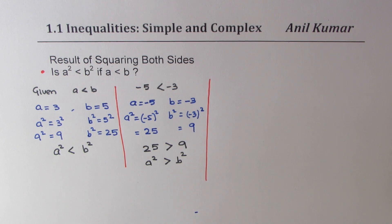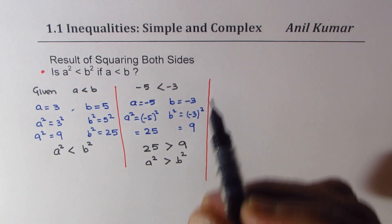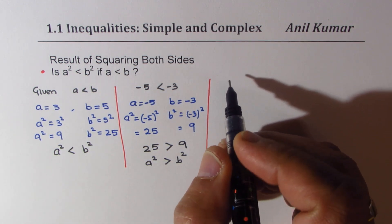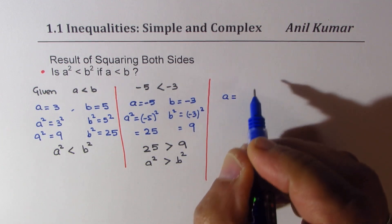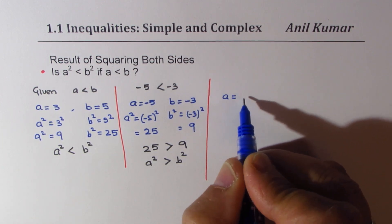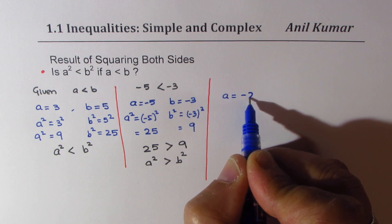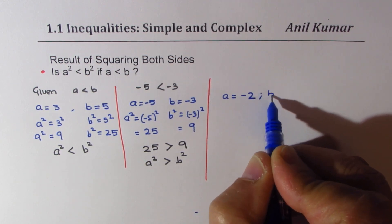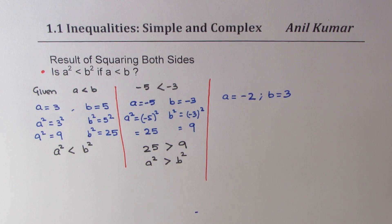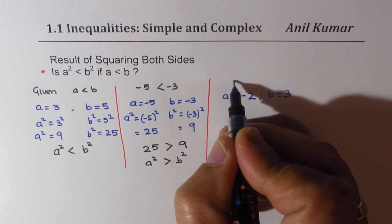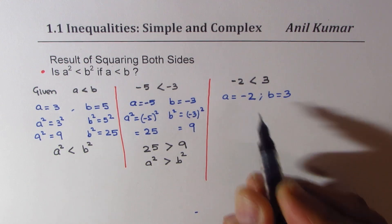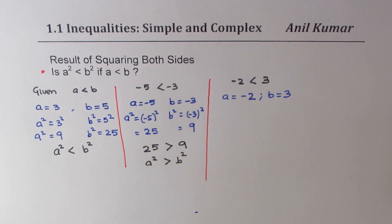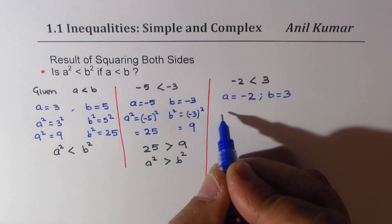Now, let's take cases when one is positive, but the other one is negative. In that case, let me take this value of a as -2, and we take b = 3. Now, clearly, we know that -2 < 3. There is a positive number. This is a negative number. Now, in this case, if I square,